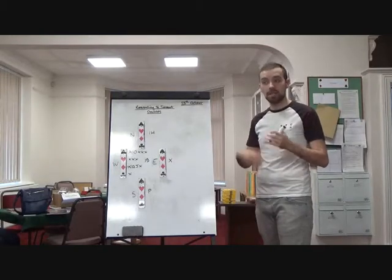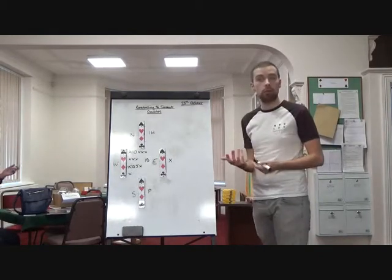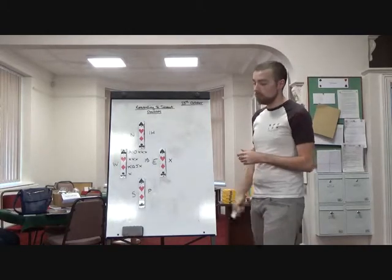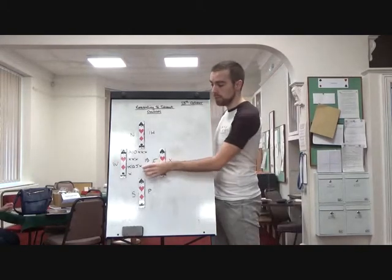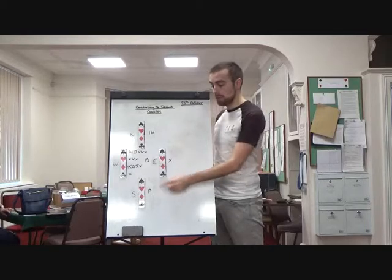In fact shouldn't, unless they've got a better hand than they've already promised. So with East doubling, you bidding at the lowest level, it might go pass, pass, pass.